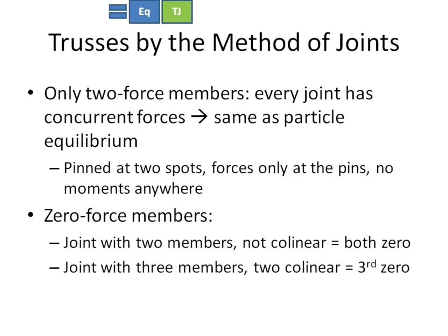This is essentially find your free body diagram, draw it, write the sum of the forces. Trusses by the method of joints is exactly that. It's just instead of looking at one point in your object, we're looking at a joint in a truss. This is a special case of a particle because we're dealing with only two force members, so every joint only has concurrent forces.